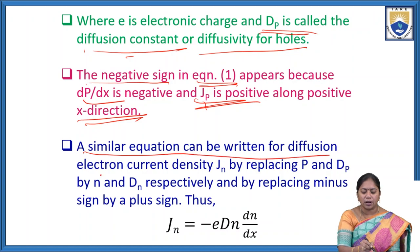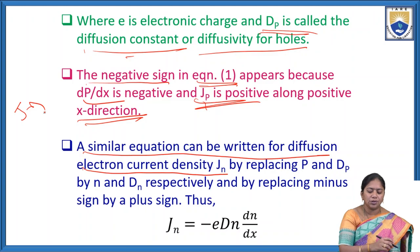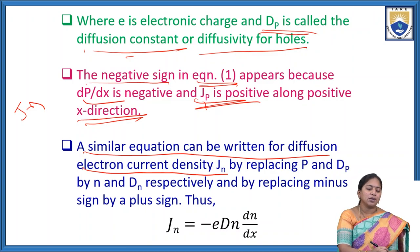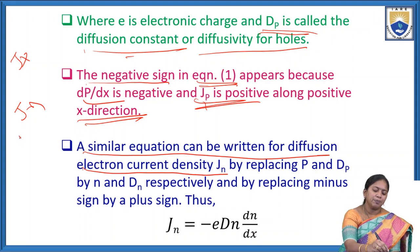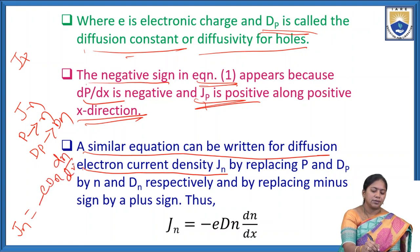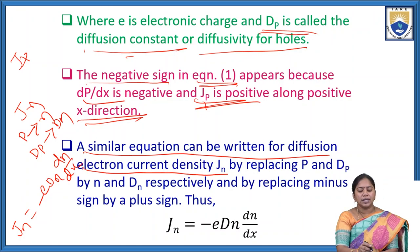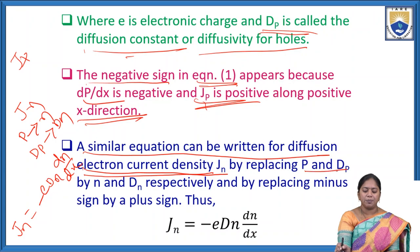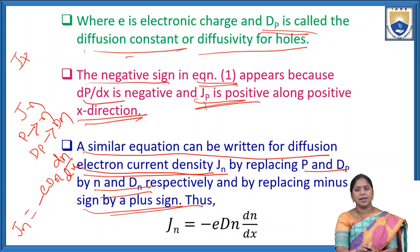A similar equation can be written for the diffusion electron current density Jn. By replacing P with n and Dp with Dn, and replacing the minus sign with a plus sign, we get: Jn = e·Dn·(dN/dx).